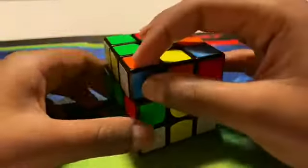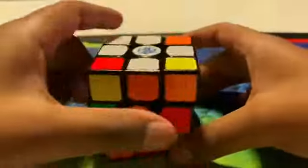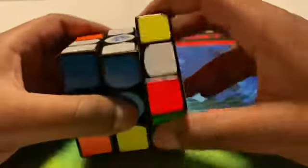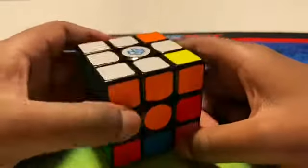This one right here has orange and blue. So we put it in between orange and blue, push it away, bring down the right row, push it back and push it up. And now we have this side lined up.